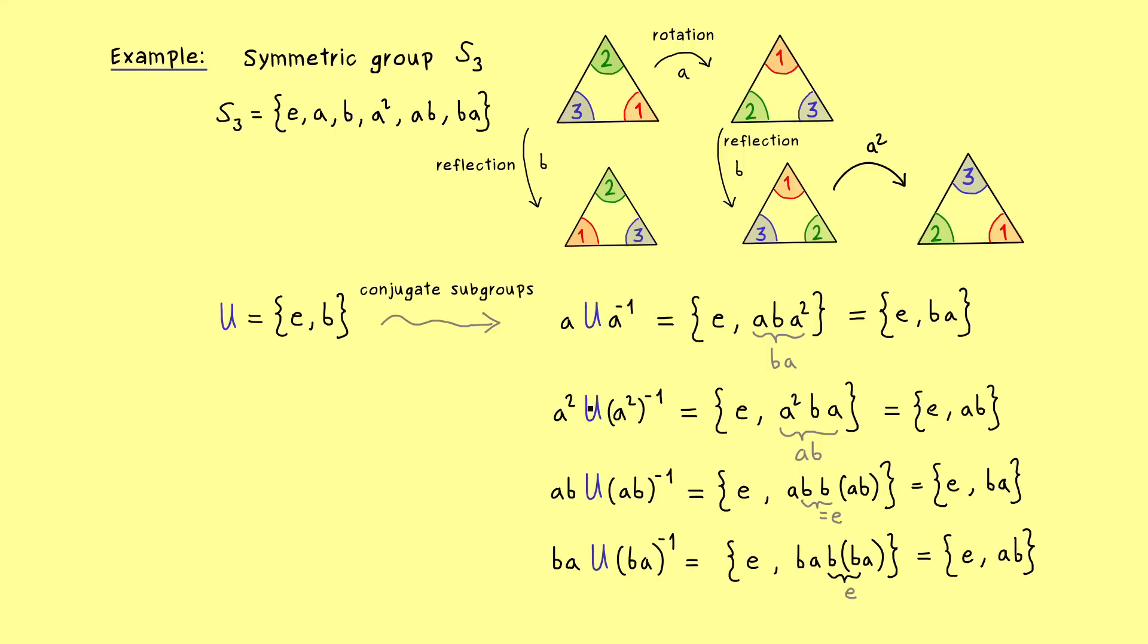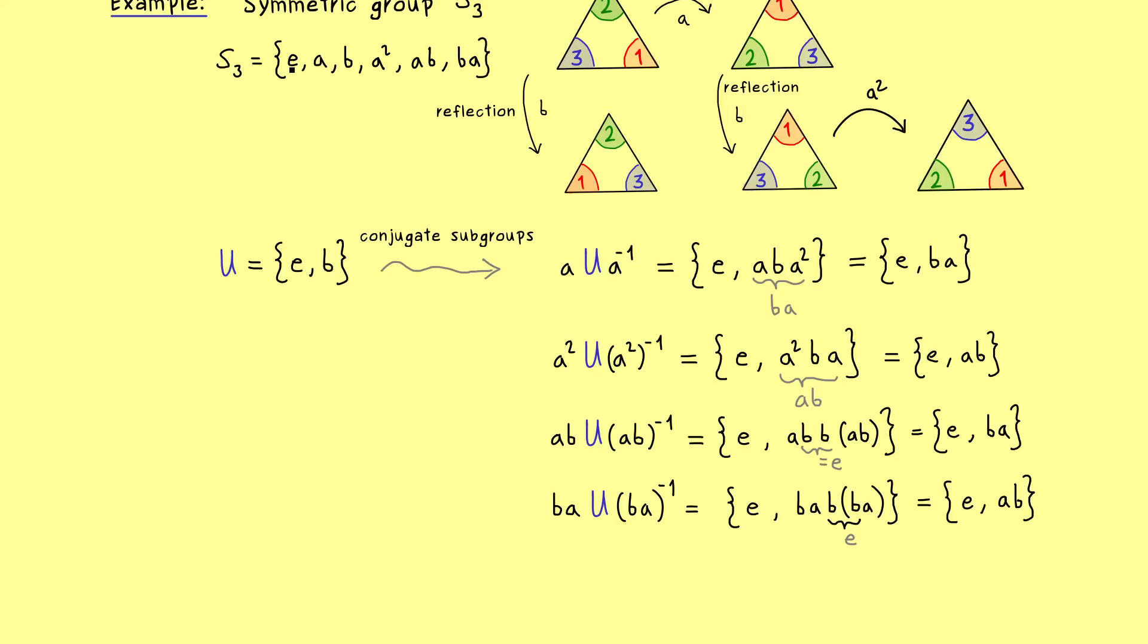And now in order to make the list complete we should also put in e and b. However there you should just see that in both cases we just get out our original group U. And now you can count we have exactly 3 conjugate subgroups to U. This means the equivalence class of U consists of 3 elements.